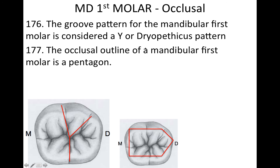Moving down to the mandibular teeth, we're going to focus on the first molar. The groove pattern for the mandibular first molar is considered a Y shape. The occlusal outline of a mandibular first molar is a pentagon — you've got that Y-shaped groove pattern and a pentagon-shaped occlusal outline, with the distal cusp forming the point of the pentagon.